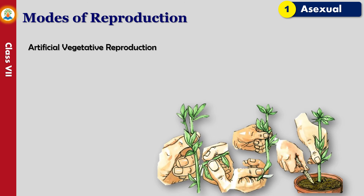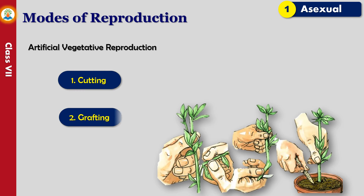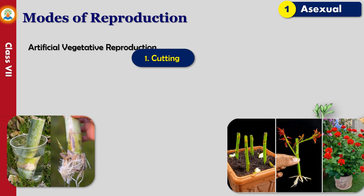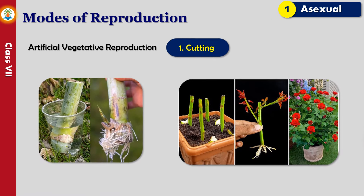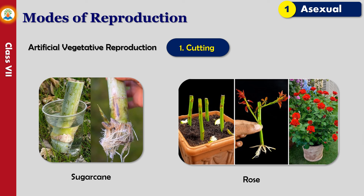Plants can also be propagated by some artificial methods. Such methods are used by farmers and gardeners to grow a variety of plants. Growing plants through artificial methods is known as artificial propagation. Some methods of artificial propagation are cutting, grafting, and layering.